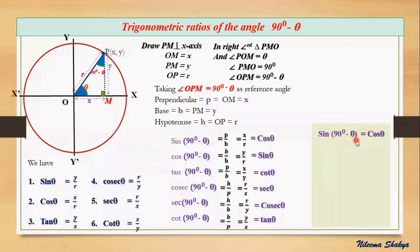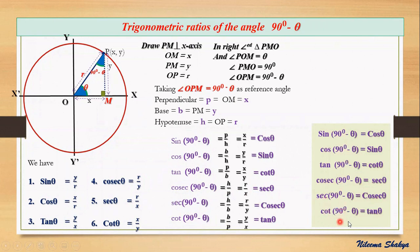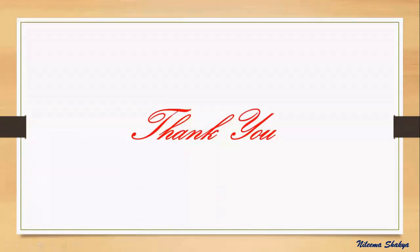Let's write the conclusion: sin(90° − θ) = cos θ, cos(90° − θ) = sin θ, tan(90° − θ) = cot θ, cosec(90° − θ) = sec θ, sec(90° − θ) = cosec θ, and cot(90° − θ) = tan θ. So here we have found all the trigonometric ratios of the angle 90° minus theta. In our next video we'll be finding trigonometric ratios of the angle 90° plus theta. Thank you for watching.